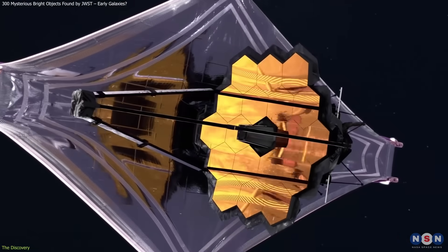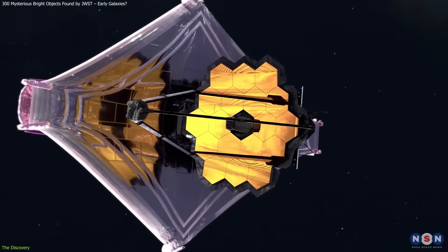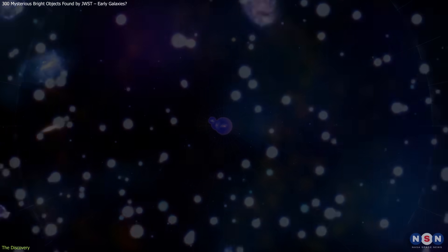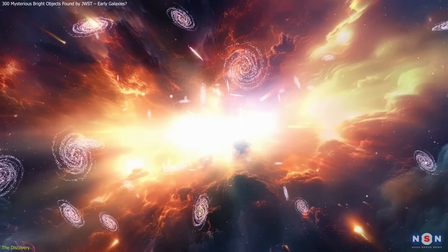The James Webb Space Telescope is designed to detect faint light from the most distant parts of the cosmos, making it ideal for probing the early universe.